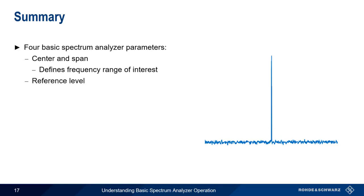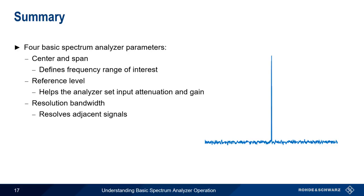Aside from keeping the trace on the display, reference level also helps the analyzer choose appropriate values for input attenuation and gain. Although it's not usually hard to decide which values to use for center, span, and reference level, choosing resolution bandwidth involves making some trade-offs. Lower resolution bandwidth helps separate closely spaced signals, and reduce the noise floor or DANL, but they also increase sweep time.